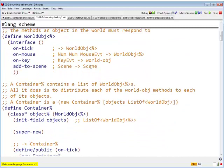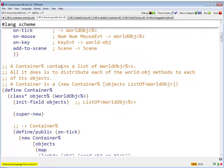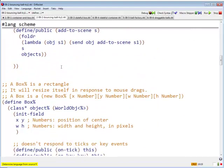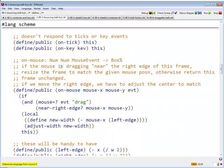So here's our worldobj, our interface, that's unchanged. Here's container, that's unchanged. Here's our box, that's unchanged.